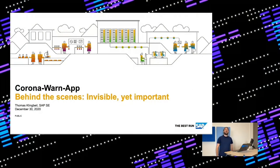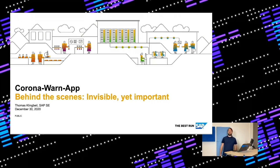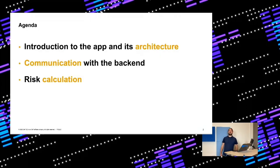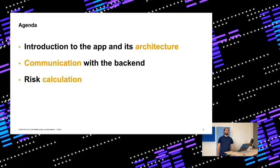I'm Thomas Klingbeil, and today I'd like to talk about the German Corona-Warn-App and give you a tour behind the scenes of the app development, the underlying technologies, and which things are invisible to the end user but still very important for the app itself. First, a short introduction to the app and architecture, then communication between the app and backend with privacy threats, and finally a look at the risk calculation.